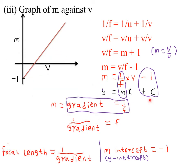Our third graph to analyze is the graph of magnification against v. If we are introducing magnification, we have to find a way to insert magnification into the equation. We know that magnification m equals v over u — that is the image distance divided by the object distance. The graph of m against v will always be a straight line, and we compare it with y = mx + c.